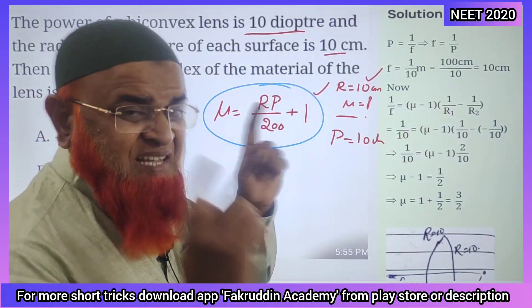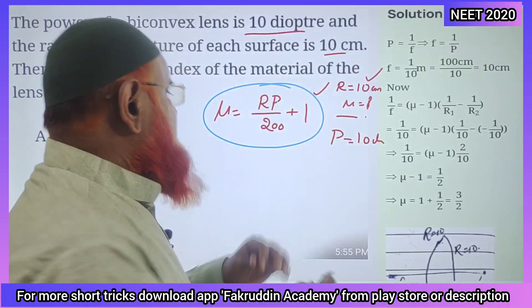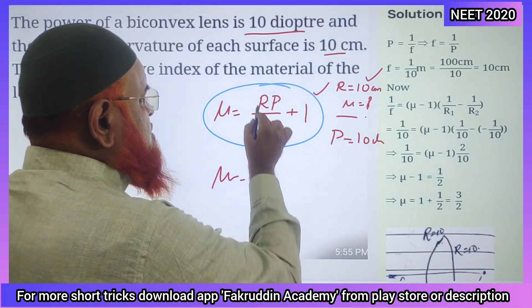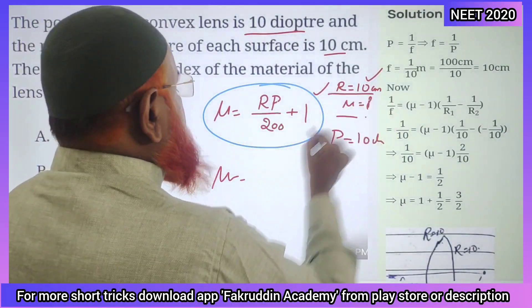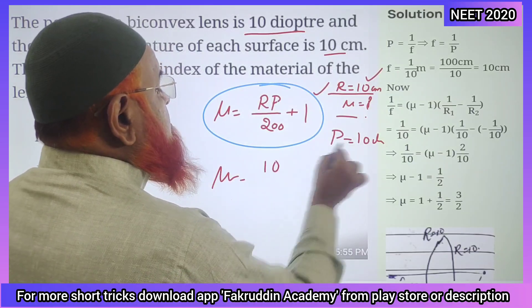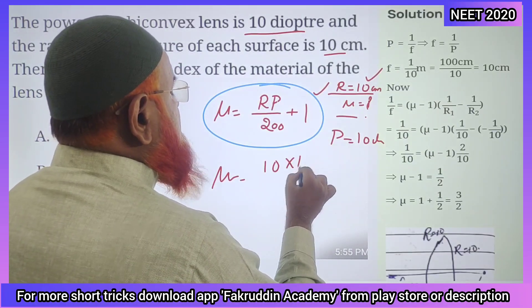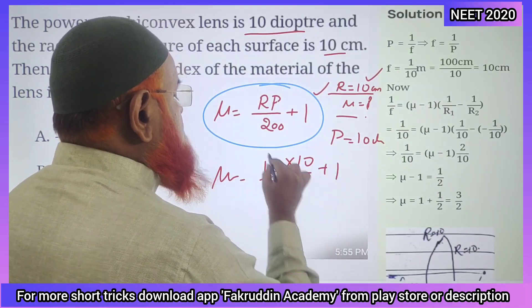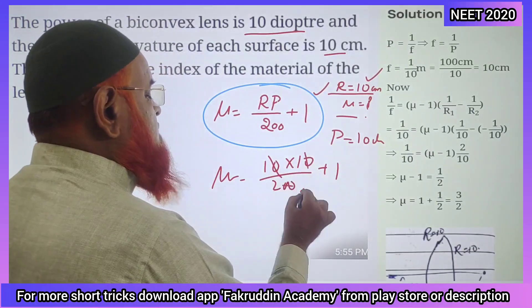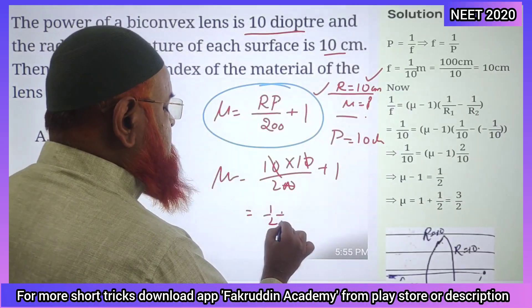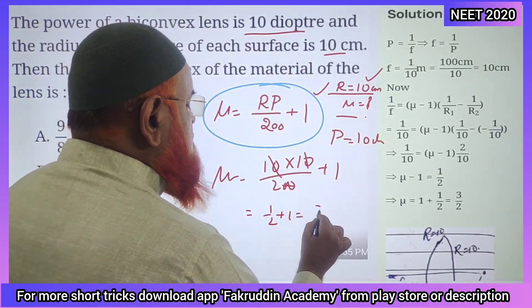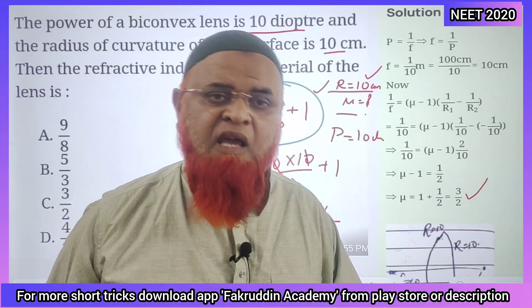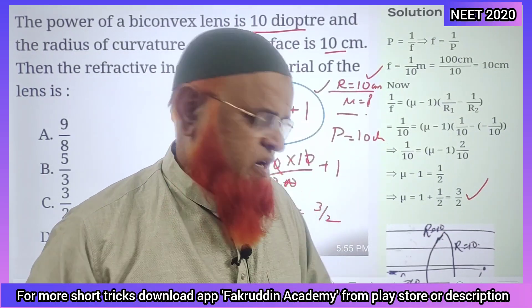So, μ = R × P / 200 + 1. Here R = 10 and P = 10, so that gives 10 × 10 / 200 + 1. The two zeros cancel, giving 1/2 + 1, which equals 3/2. Your answer is ready. Hope you have enjoyed!